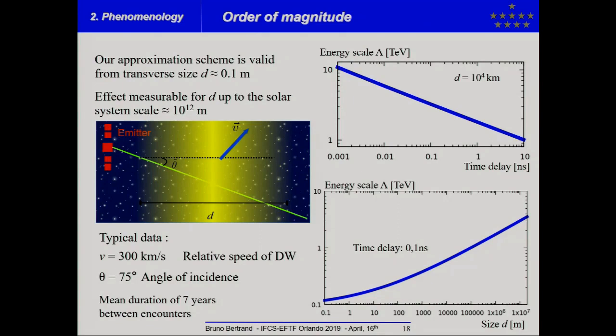And so, if you analyze the order of magnitude, first, approximation scheme is valid from transverse size of domain wall of the order of magnitude of the carrier wave length and the effect should be measurable for transverse size of domain wall up to the scale of the solar system.